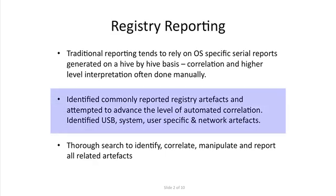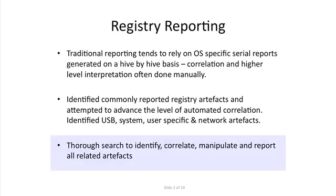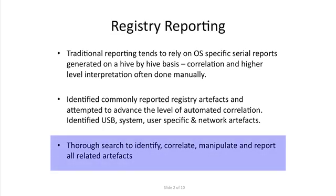I started by identifying some common areas that people reported, such as USB information, system information including when the system was last switched on, user-specific information about user actions on the system, and also network artifacts — what networks a user has connected to and when. I then did a thorough search through the registry to identify specific artifacts, and I'm going to talk about USB just to give you a sample of what I did.